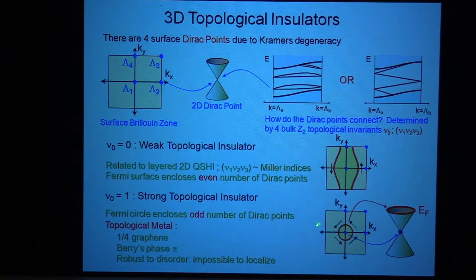And so again, in this case, these states are impossible to localize, even with strong disorder. So they have the same sort of robustness as the helical edge states of the quantum spin hall insulator.